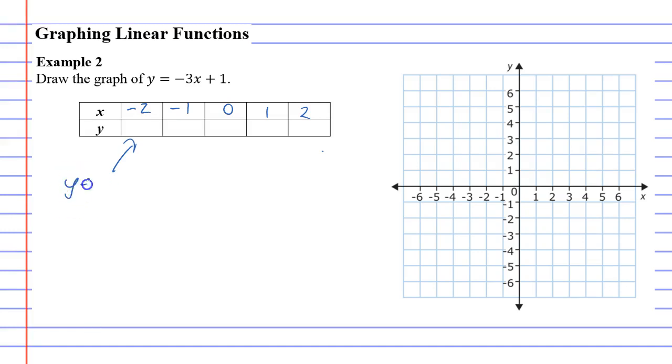All right, so our formula looking at column 1, our formula is y equals negative 3x plus 1. So we're going to go negative 3 times x, or times negative 2, plus 1, and this one's going to come out to 7.